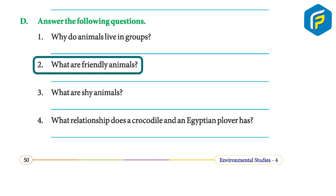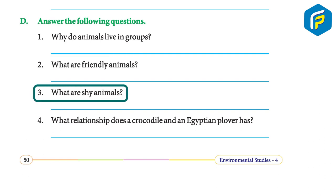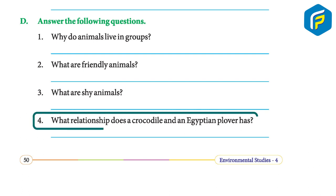Friendly animals allow us to go near them or feed them. Shy animals run or hide when they see people coming near them. The Egyptian plover and crocodile share a give-and-take relationship — the plover feeds on bits of decaying meat stuck in the crocodile's teeth, so the plover gets its food and the crocodile gets its teeth cleaned.